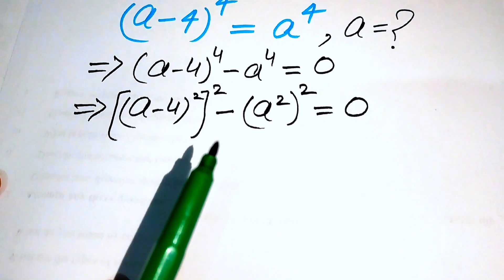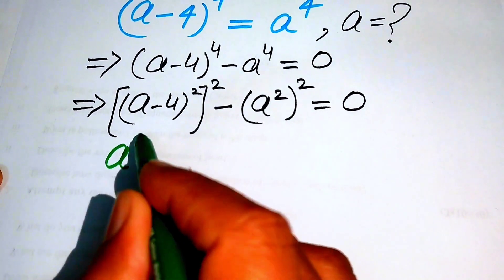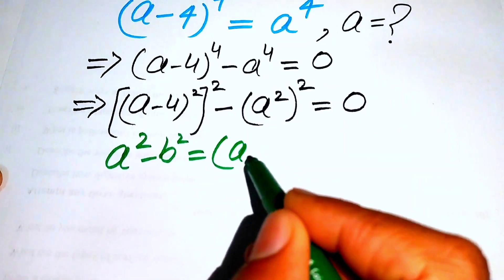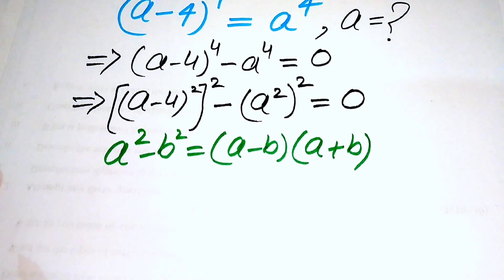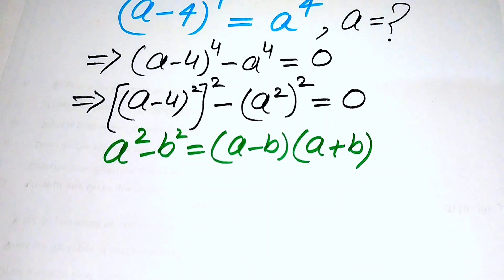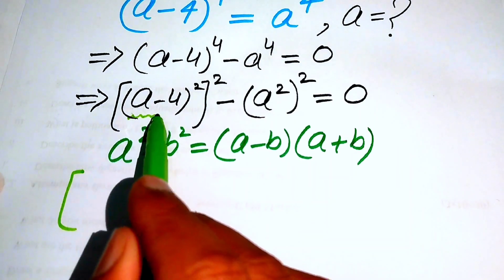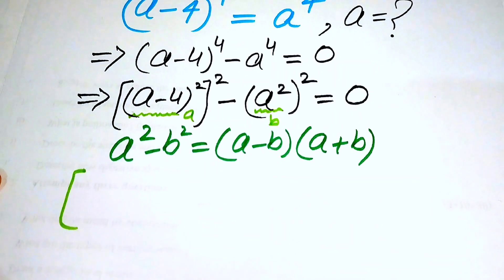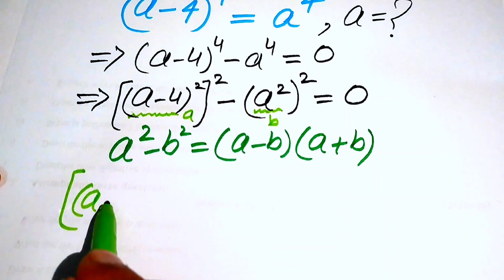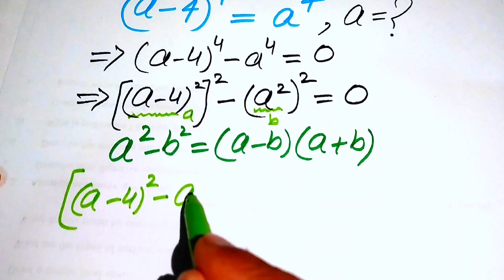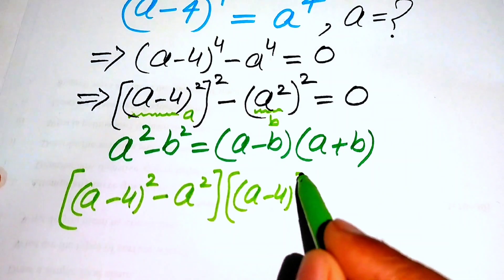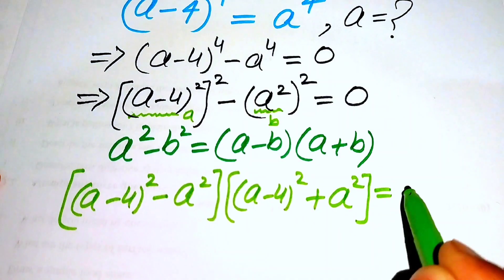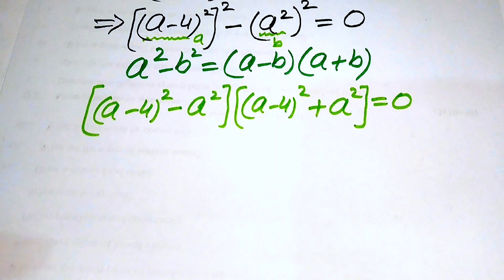We now apply the algebraic identity a² - b² = (a - b)(a + b). Here a = (a - 4)² and b = a², so the expression factors as [(a - 4)² - a²] × [(a - 4)² + a²] = 0.